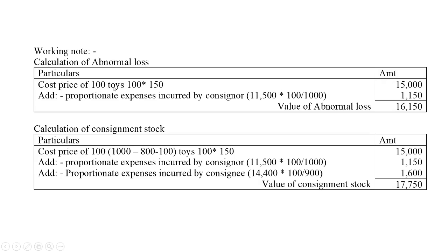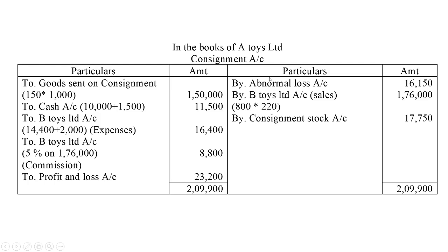Abnormal loss calculation: cost price of 100 toys destroyed is 100 × Rs. 150 = Rs. 15,000. Add proportionate expenses incurred by consignor: Rs. 11,500 × 100 divided by 1,000 = Rs. 1,150. So the value of abnormal loss is Rs. 16,150, debited to abnormal loss account.